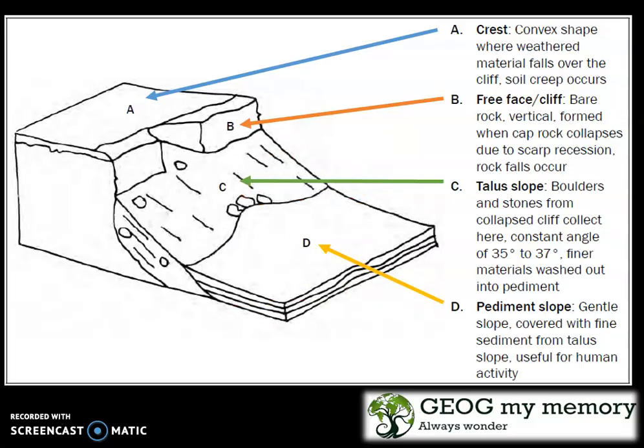A is the area called the crest. It is a convex shape where weathered material falls over the cliff. Soil creep occurs here.